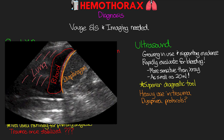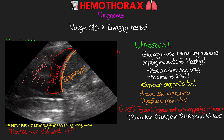For trauma we typically use something called the focused assessment with sonography and trauma, or the FAST scan — taking a quick look with the ultrasound probe at four primary areas: the pericardium, the perisplenic, the perihepatic, and the pelvis. They're looking to see if there's bleeding in any of those compartments, as these would be very emergent situations requiring rushing to the OR or intervention on the table. There is also the expanded E-FAST, which includes oblique and anterior evaluations of the hemothorax looking for dependent fluid as well as pneumothorax.